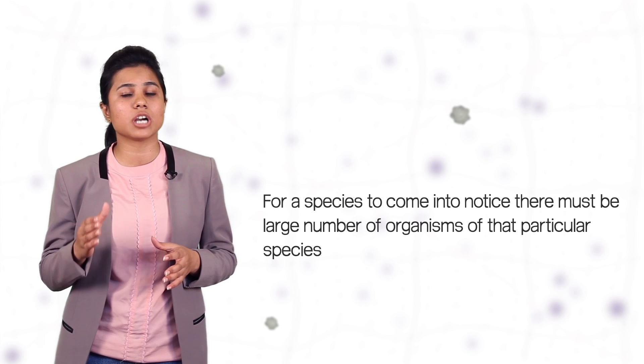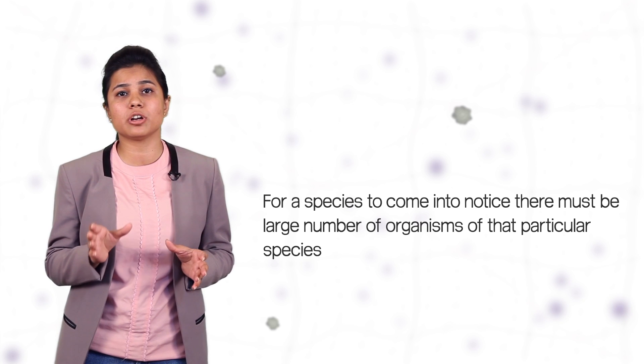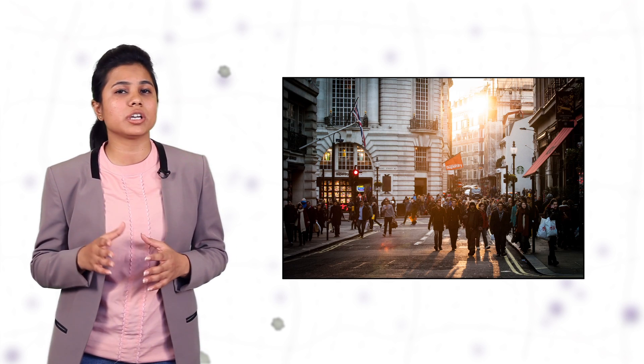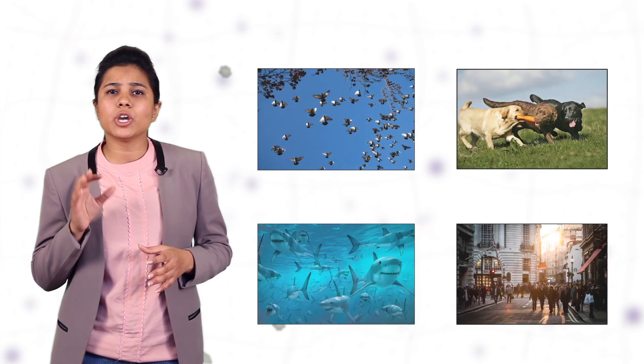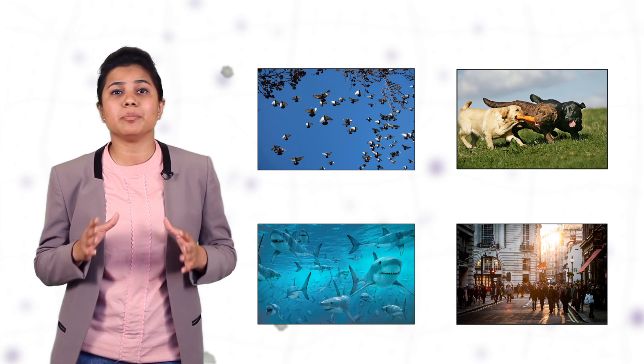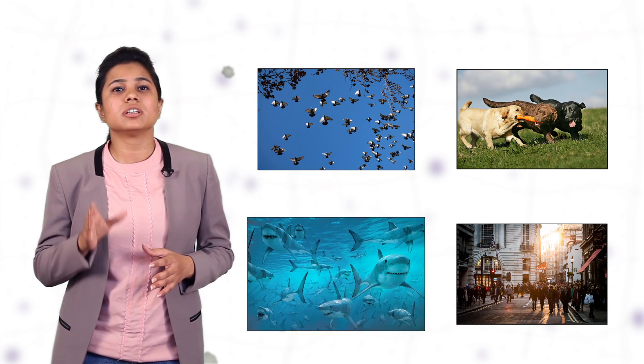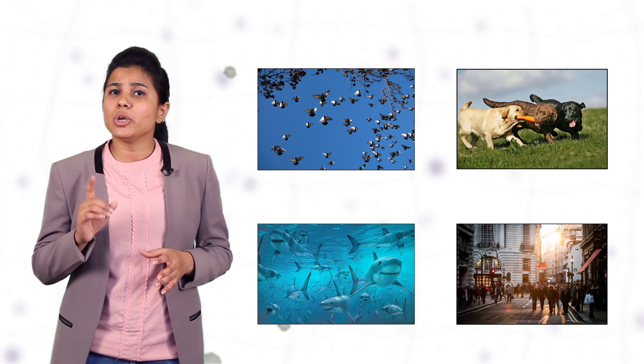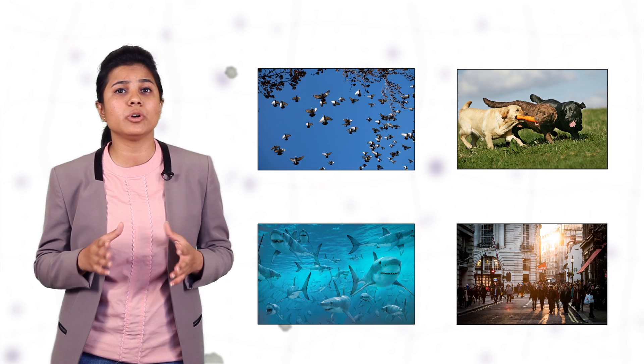One more important point of reproduction is that for a species to come into notice, it is necessary that there are large number of organisms of that species. Whenever we see living organisms around ourselves like pigeons flying in the sky, labradors playing with each other in the yard of the house or sharks wandering in the sea water and even human beings walking around in the streets and talking to each other, we observe a common pattern that there are more than one organism of a particular species. In fact, there are many in number. We know about pigeons, sharks and labradors only because they are many in number and if there were only one pigeon in some corner of the world, then hardly anyone would have known about it.